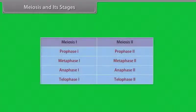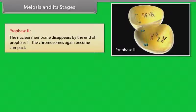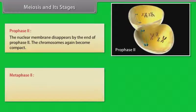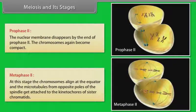Meiosis 2 is initiated immediately after cytokinesis, usually before the chromosomes have fully elongated. In contrast to meiosis 1, meiosis 2 resembles a normal mitosis. The nuclear membrane disappears by the end of prophase 2. The chromosomes again become compact. After prophase 2, metaphase 2 takes place. At this stage, the chromosomes align at the equator and the microtubules from opposite poles of the spindle get attached to the kinetochores of sister chromatids, similar to mitosis.